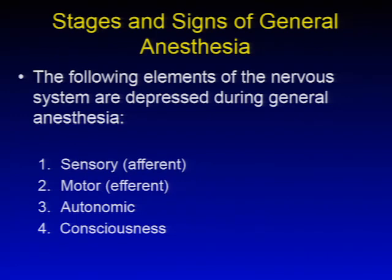We're going to start this talk with the stages and signs of general anesthesia. The following elements of the nervous system are depressed during general anesthesia: the sensory or afferent, motor or efferent, the autonomic, and consciousness.